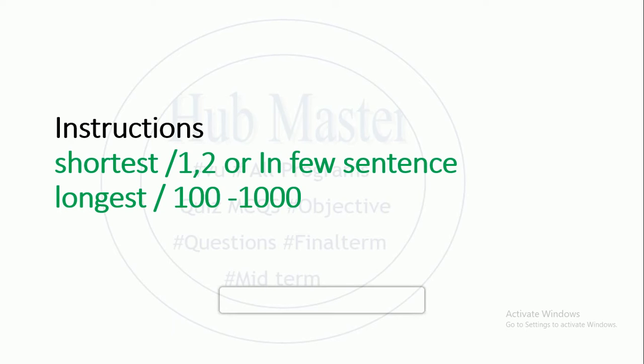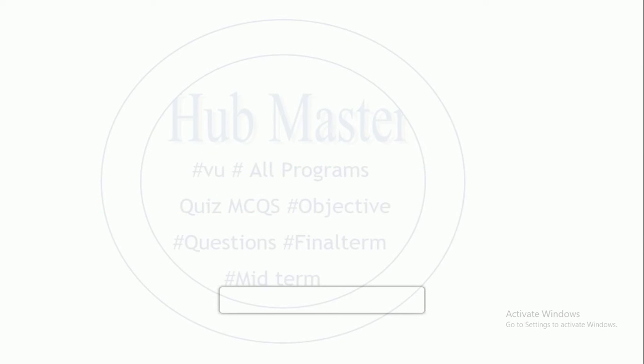The instructions have the shortest length — 1 to 2 paragraphs, or some sentences. In other words, if you look at the length, they are 100 to 1000 sentences. These are the instructions.